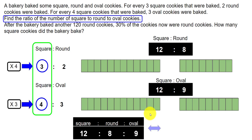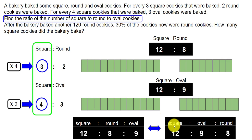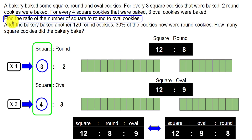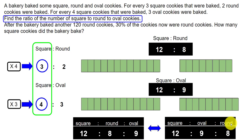We can also write the ratio in a different order: square to oval to round is 12:9:8. I'm writing it this way for convenience, as it will become useful when solving the second part of the question.